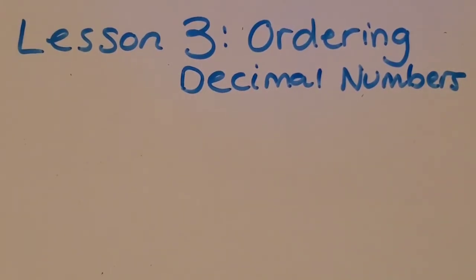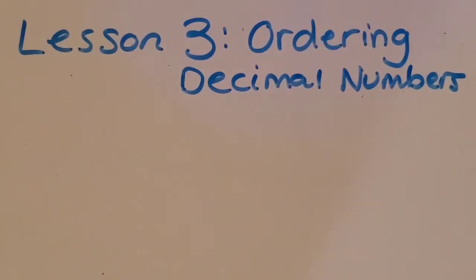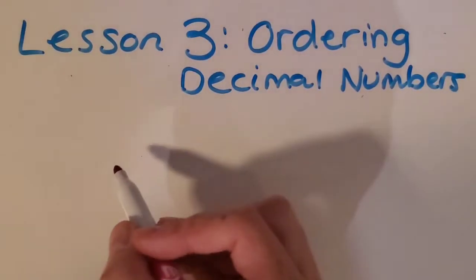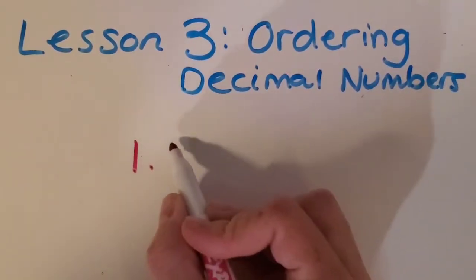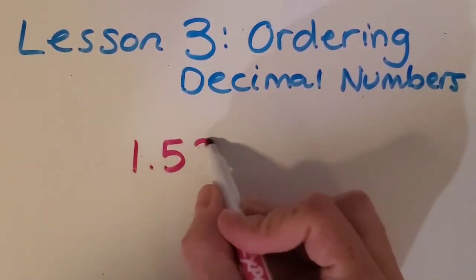Alright, welcome back guys. Here is our lesson three on ordering decimal numbers. Last week we worked on comparing decimal numbers, and so now we're going to move right along and use those same skills to order four different decimal numbers. So real quick, let's review what we talked about last week.